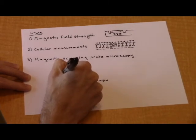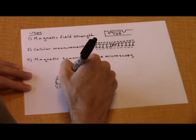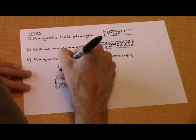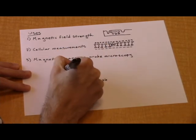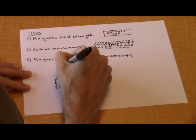Lastly, N-V centers could find use by being integrated into scanning probe microscopy techniques. The details of these microscopy techniques is beyond the scope of this video, but the general idea is that an N-V center could be embedded into a tip that is very thin, less than 10 nanometers at the tip.